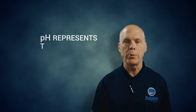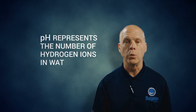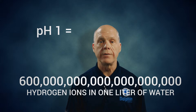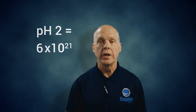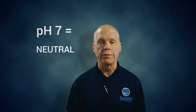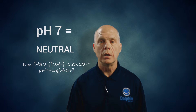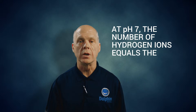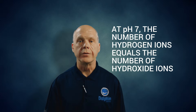pH is simply a calculation that represents the number of hydrogen ions in water. The math behind it gets a little tricky for most people, but very roughly: a pH of 1 is around 600 trillion trillion ions in one liter of water, either free or as part of a hydrogen ion. A pH of 2 is ten times this, and a pH of 3 is ten times a pH of 2. Normally, pH is roughly 7. At this point, the concentration of hydrogen ions is exactly equal to the concentration of hydroxide ions — in other words, if they're all matched up properly as water molecules, there would be nothing left over.